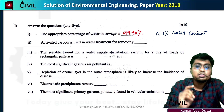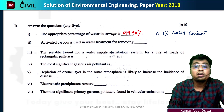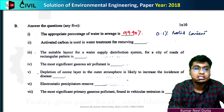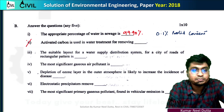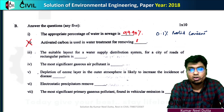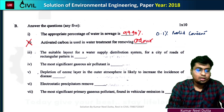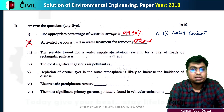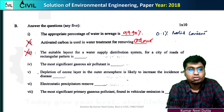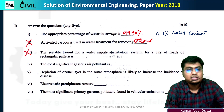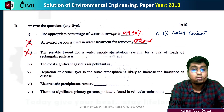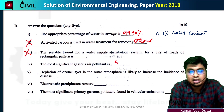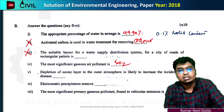Activated carbon is used in water treatment for removing impurities. The most significant gaseous air pollutant is sulfur dioxide (SO2).